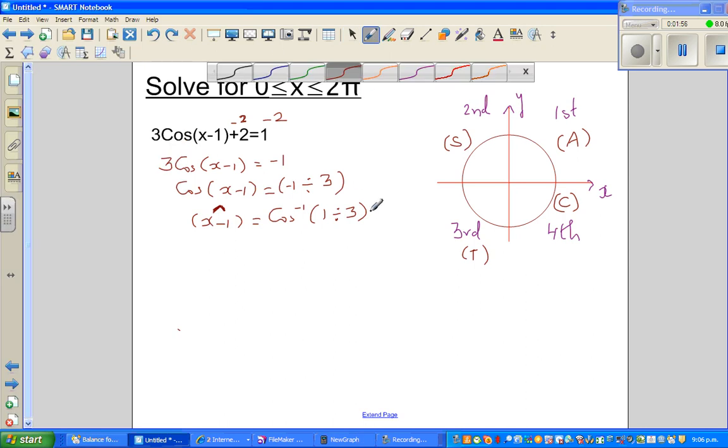So this is 1.23 radians. We do not write radians, it is understood. So this is your radian. So if you add 1 to both sides, your reference angle would be 2.23.